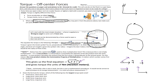The cross product figures out how much two vectors are not aligned, while the dot product from work tells you how much two vectors are aligned. So vectors have multiple ways of multiplying, and we've learned two of them this week: the dot product and the cross product.